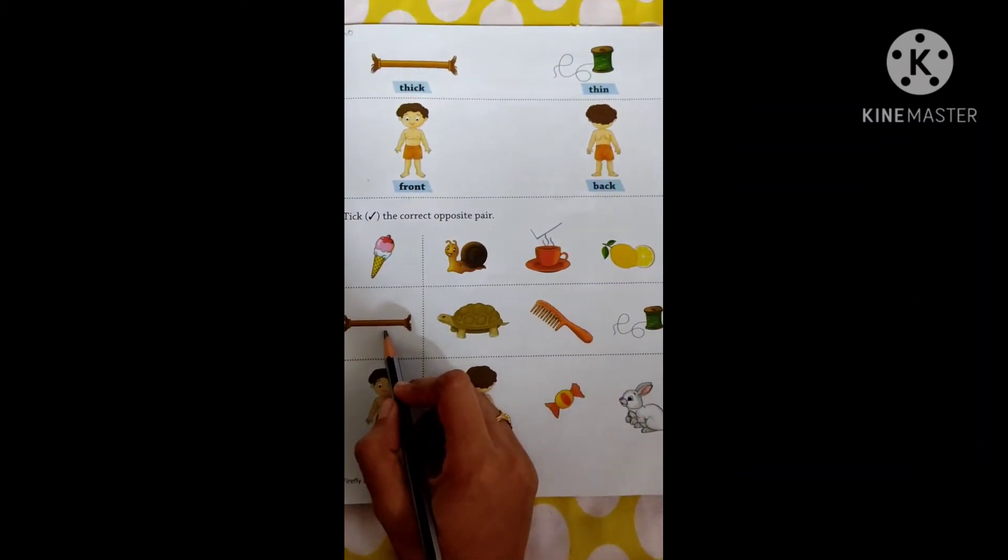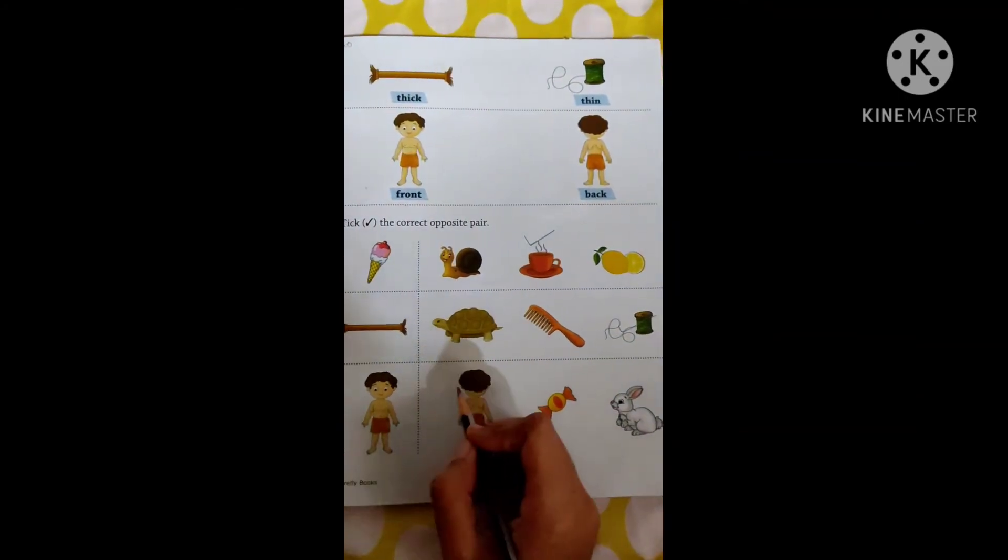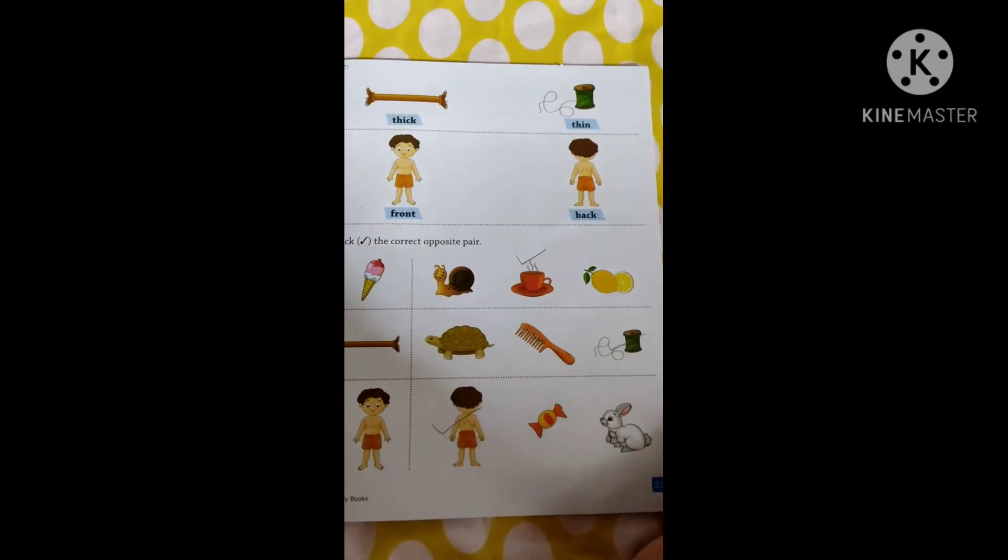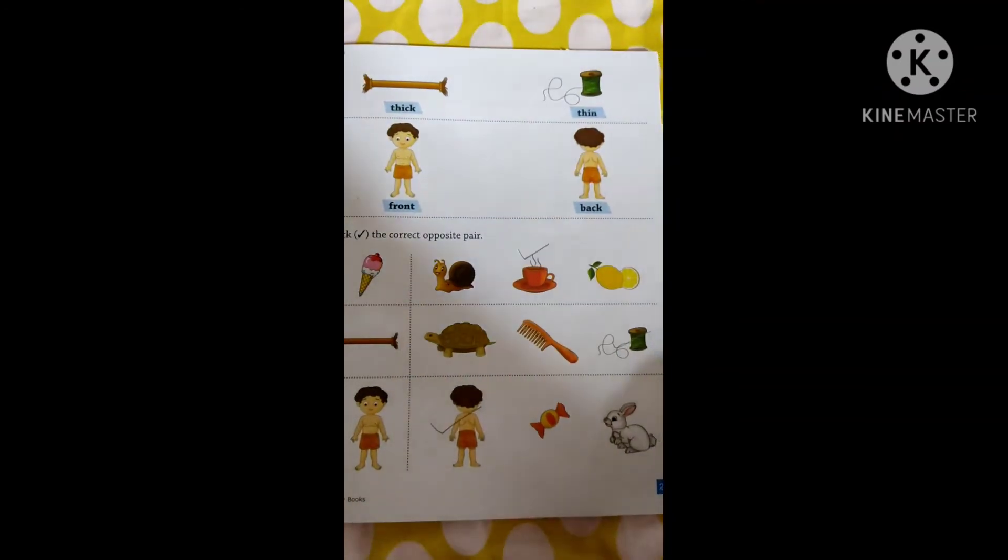What is this? That is thick. Thin. Front, back. So like this we have to do this activity, and you can learn more opposite words with the help of your parents, children.